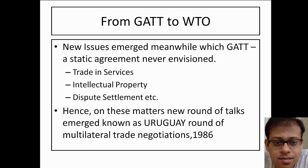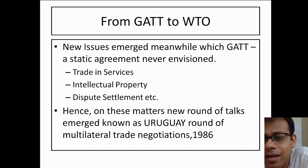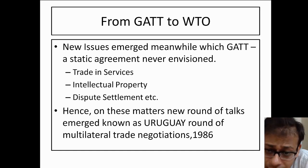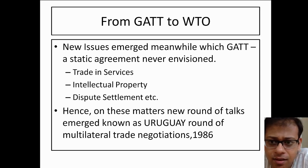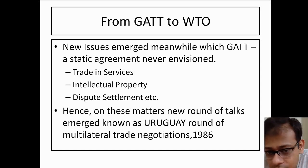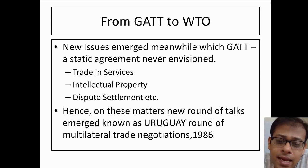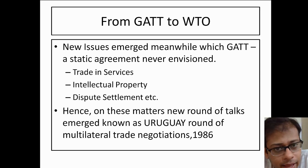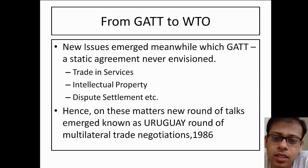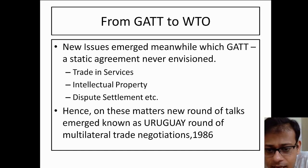By the 1980s and 1990s, the world economic situation had changed significantly — world trade had grown and new trade dimensions emerged. Trade in services started, which GATT had never envisioned. Issues like intellectual property — copyrights and patents — arose. As international trade grew, disputes also increased, and GATT had no detailed provisions for dispute settlement. Textile and agriculture were also excluded from GATT. All these gaps needed to be addressed.